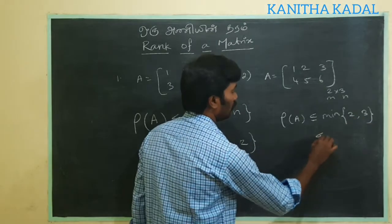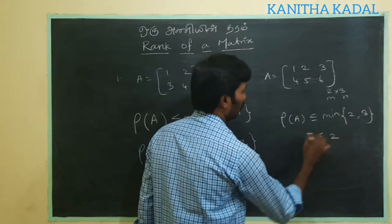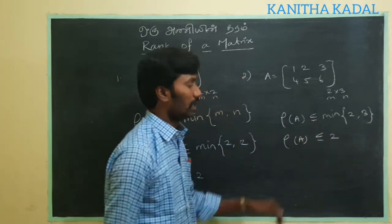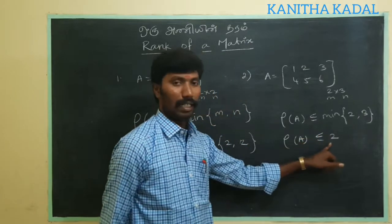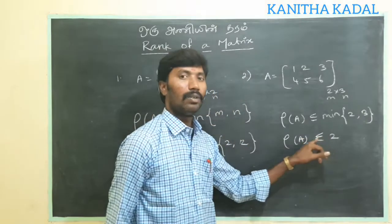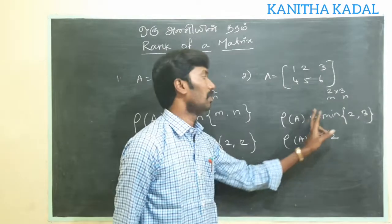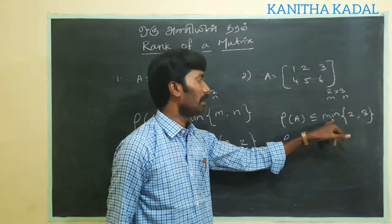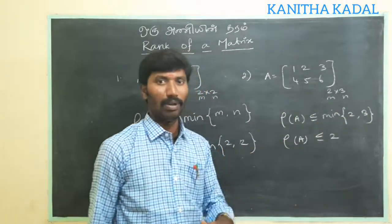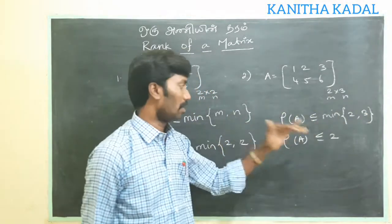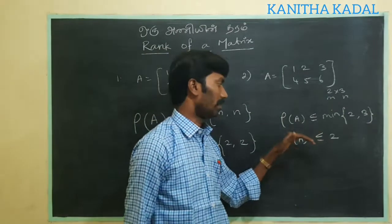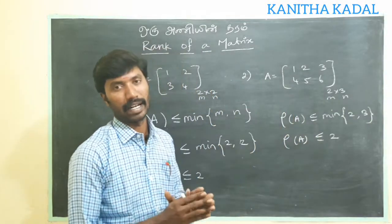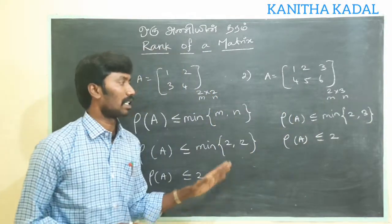Rho of A is less than or equal to 2. Then 2 is 1, then 3 is 1, then 1 is 2, then 3 is 2 — and that is the minimum. Those are the two main points. That is the same point. That is the concept.